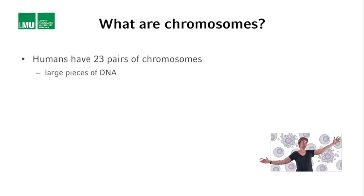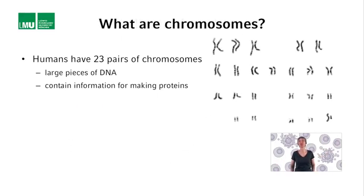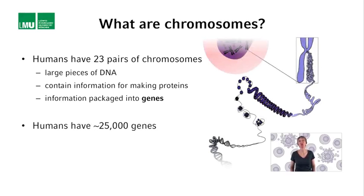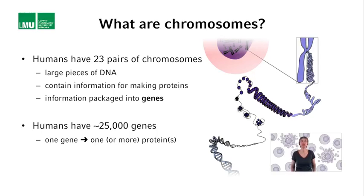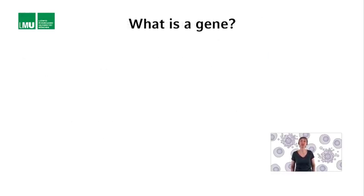Chromosomes are large pieces of DNA that contain the information for the synthesis of many proteins and molecules that make up the cells of our bodies. This information is packaged into genes — in the case of humans, about 25,000 different genes. Each gene harbors the information to make one, sometimes more than one, particular protein or molecule at the right time and at the right place.